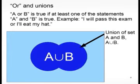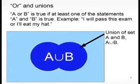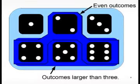Then there's the OR operation. The statement A or B is true as long as A is true or B is true, or both. The corresponding set concept is the union, which contains elements found in at least one of the sets in question — in set A or in set B, if you will. The union of even dice outcomes and outcomes larger than three are the outcomes two, four, five, and six.